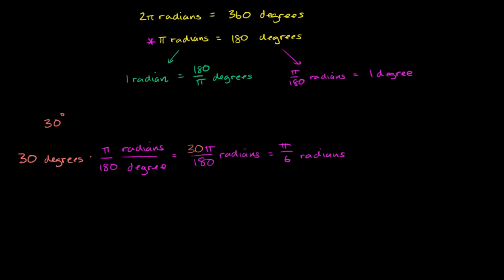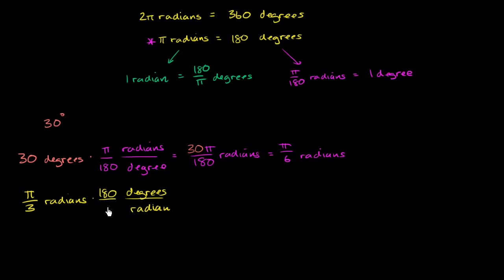Now let's go the other way. If we have π over 3 radians and I want to convert that to degrees, we need to figure out how many degrees there are per radian. For every 180 degrees, you have π radians, so 180 degrees over π radians. The radians cancel out, the π's cancel out, and you're left with 180 over 3 degrees, which is 60 degrees.